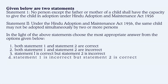The last question presents two statements. Statement one: no person except the father or mother of a child shall have the capacity to give the child in adoption under the Hindu Adoption and Maintenance Act, 1956. Statement two: under the Hindu Adoption and Maintenance Act, 1956, the same child may not be adopted simultaneously by two or more persons.